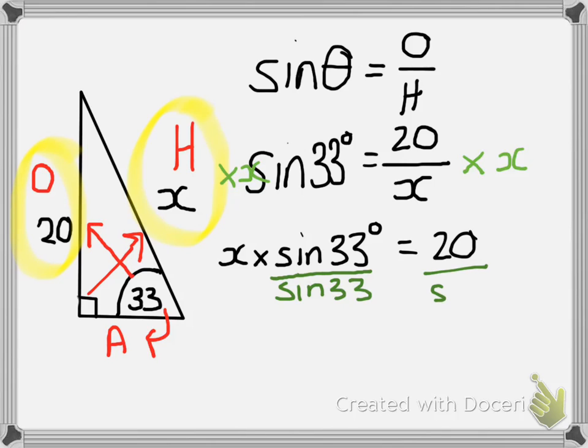By doing this, it means that we can cross out the sin 33s from the left hand side of the equation, because anything divided by itself is one. So we are just left with x on that side of the equation. We're going to rewrite this out neatly again.